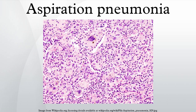Aspiration pneumonia is typically diagnosed by a combination of clinical circumstances, radiologic findings, and microbiologic cultures. Some cases are caused by aspiration of food particles or other particulate substances like pill fragments, which can be diagnosed by pathologists on lung biopsy specimens. Related conditions include dysphagia, meconium aspiration syndrome, nosocomial pneumonia, and superior mesenteric artery syndrome.